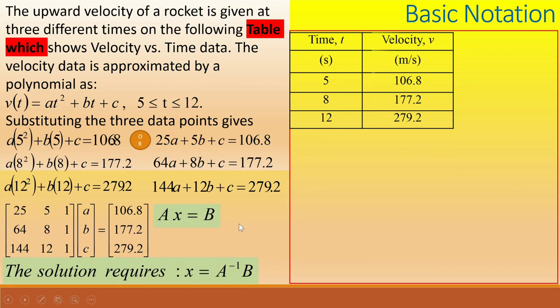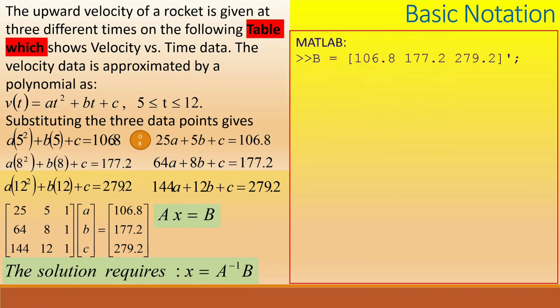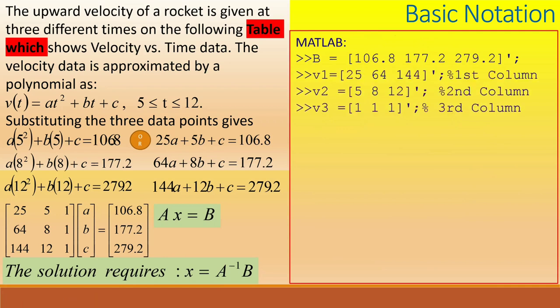Let's see how it's done in MATLAB. We define an array B with entries 106.8, 177.2, and 279.2. Note the entries can be comma separated or spaces between them. The ascent at the end of the closing bracket represents the transpose operation. Using the ascent, we define the three data points v1, v2 and v3 at three different times. Next we form the matrix A from these three columns. Note that the size should be the same.